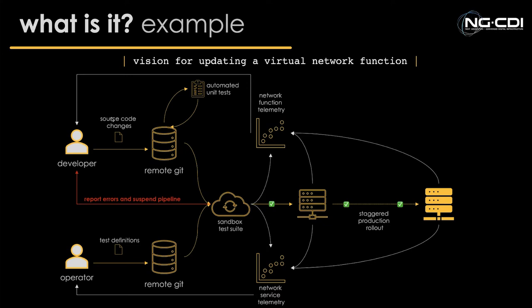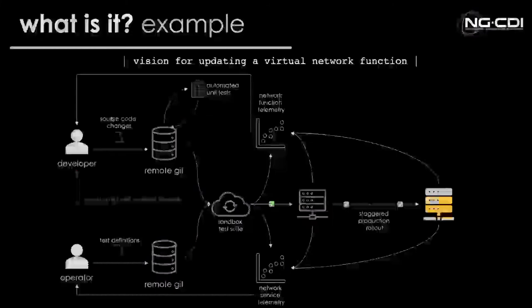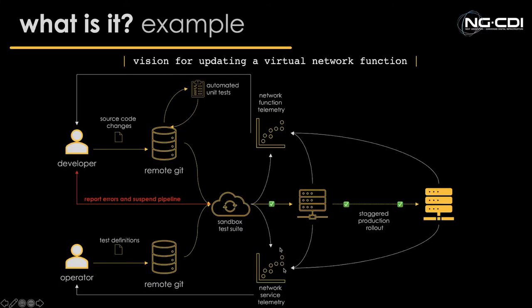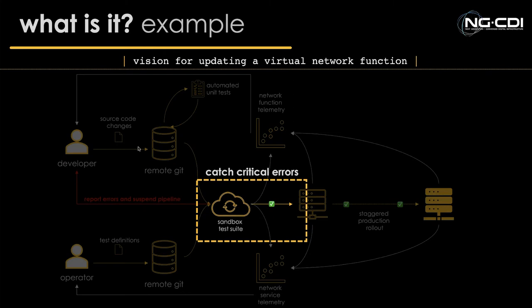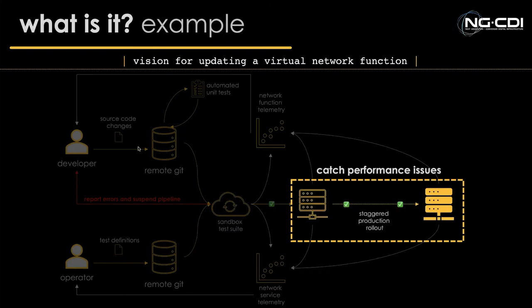Collecting these metrics is vital. Another thing to think about is a separation between network service telemetry and network function telemetry. To an operator, service telemetry might be more important — being able to see that the network as a whole is operating as expected. To the developer, they care more about their specific VNF, as teams develop increasingly specialized smaller units. The TLDR is: we can test changes in a sandbox to catch critical errors before any change propagates to the production network, and via a staggered rollout and targeted monitoring we can catch performance-related issues quickly and roll back if required.